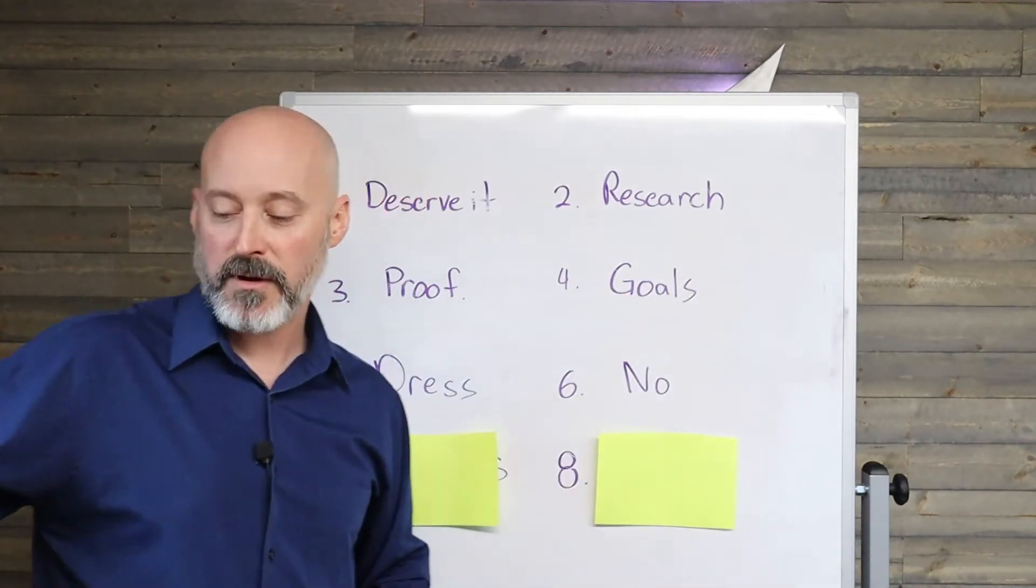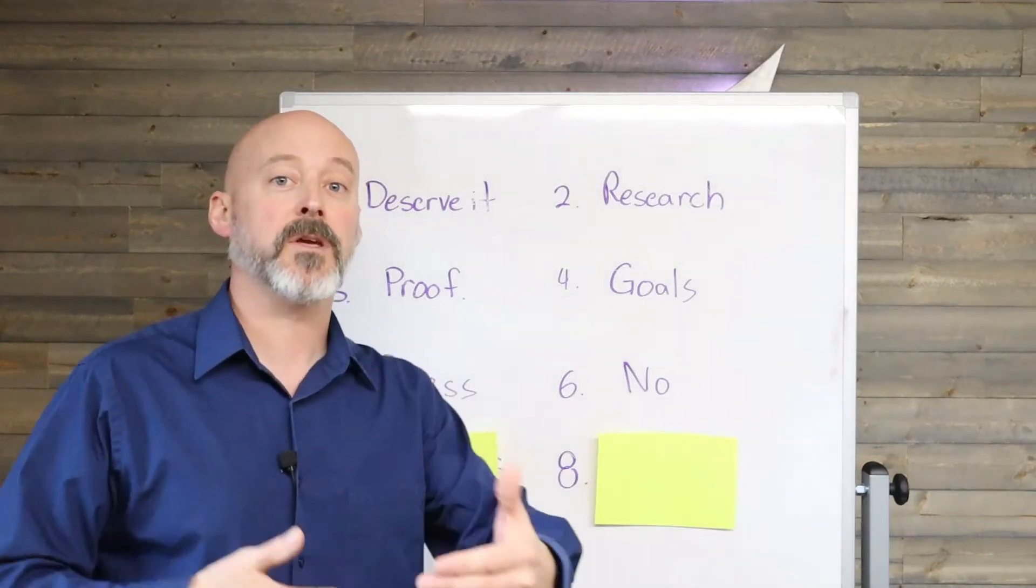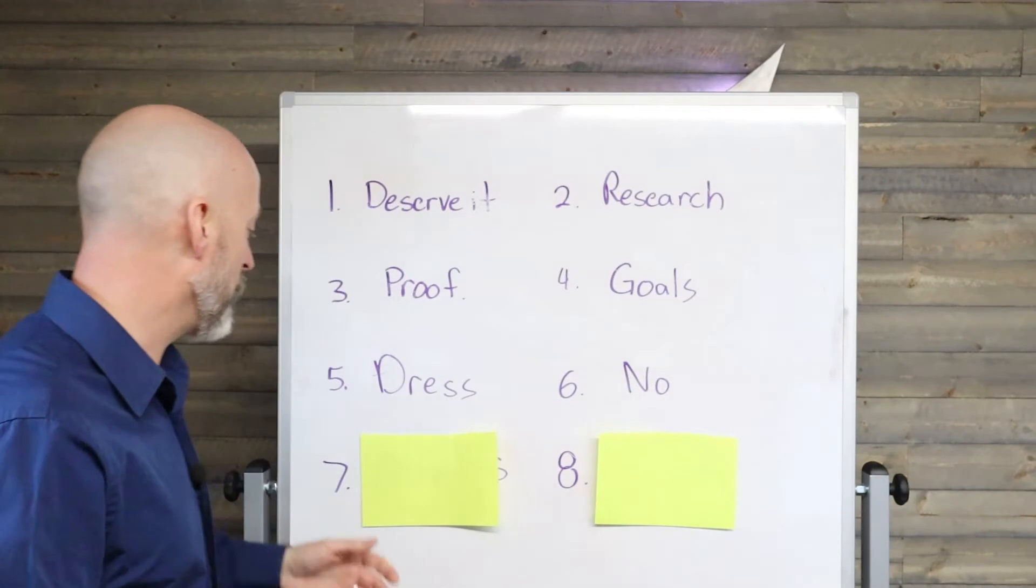Expect them to say no. That is number six. They might say no. That's okay, but expect that because there might be some negotiation right there and you might find out why they're saying no, which is very important to know as well.